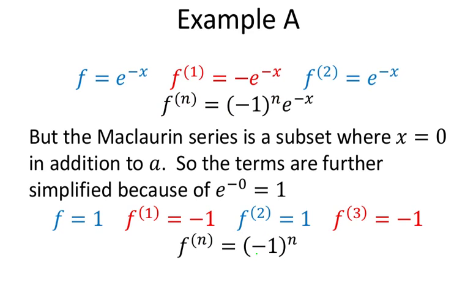We substitute 0 in for x because it's a McLaurin series, and e to the 0 power is always equal to 1. These functions of f — which I've written compactly — technically f(0) would equal 1. If this was f to the 1st, then this would be negative 1. If it was f to the 2nd, the 2nd derivative, then it would be positive 1. As it progresses to more and more derivatives, our f term toggles between 1 and negative 1.